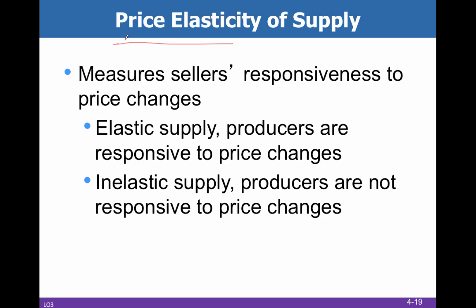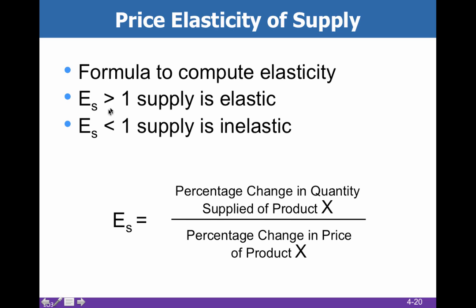We're talking about the responsiveness of sellers to changes in price. We have the same deal: elastic supply and inelastic supply. With inelastic supply, producers are not going to be responsive to price changes, but with elastic supply, they will be. We're going to have elastic supply whenever the coefficient is greater than one, and inelastic supply whenever the coefficient is less than one.